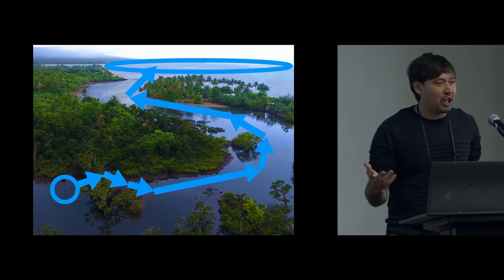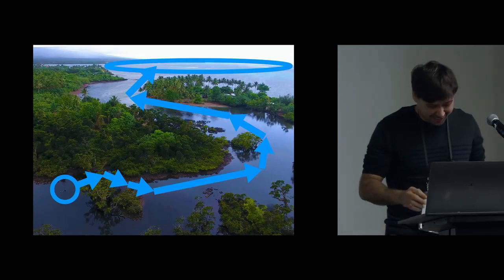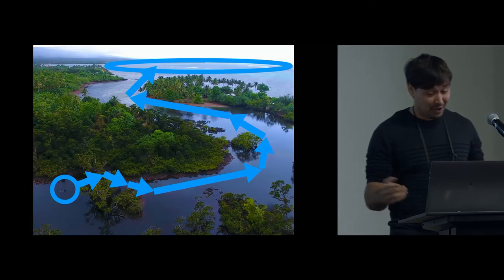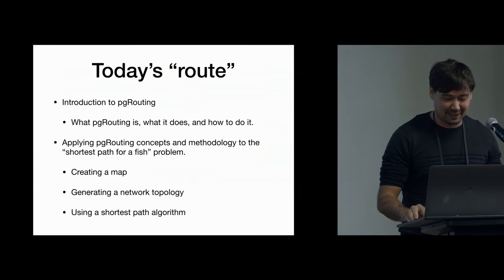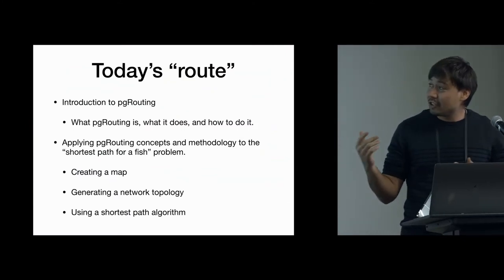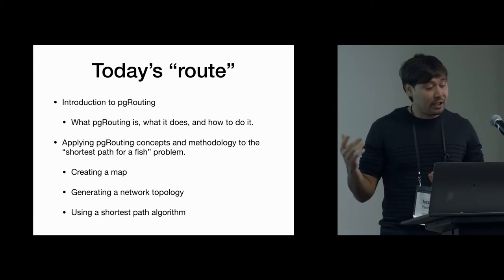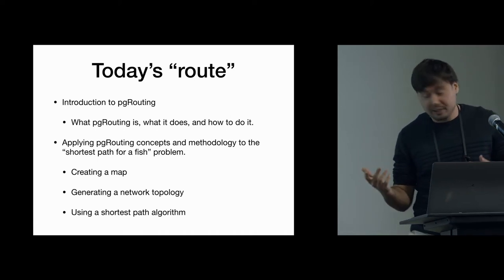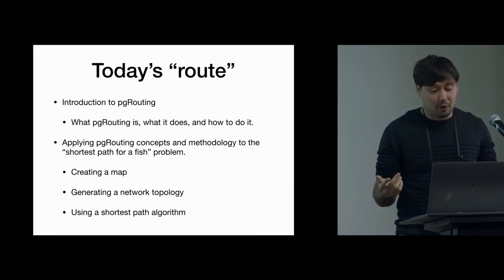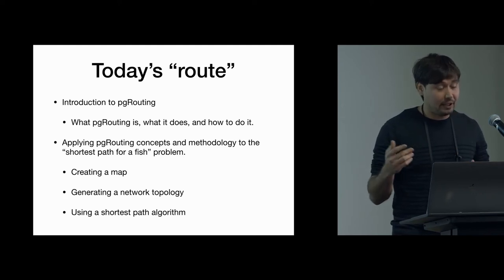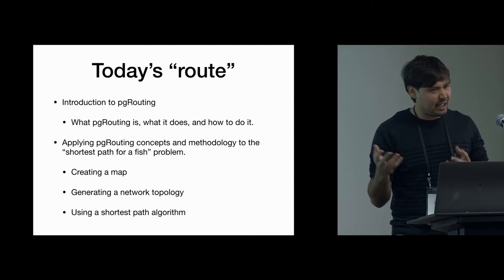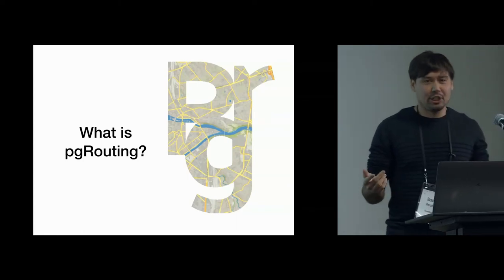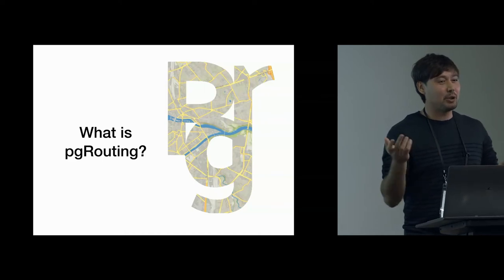We can use PG routing to solve this problem, and maybe also some image classification tools. So here's a brief overview: I'm going to introduce PG routing — talk about what it is, what it does, and how to do it — and I'll also discuss how I used PG routing to find the shortest path for fish I observed in mangrove forests in Samoa. So what is PG routing? PG routing is a software library written in C++.